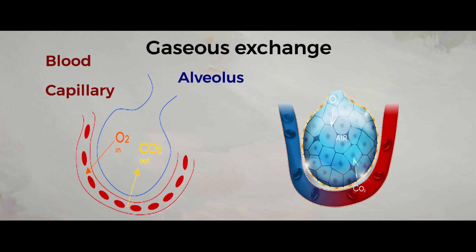When you breathe in, you have more oxygen in the alveoli, while the blood flowing in the capillaries has more carbon dioxide and only a limited amount of oxygen. Comparing the concentration of oxygen in the alveoli and in the blood capillaries, you have learned that gas molecules move from higher concentration to lower concentration. So, since there is high concentration of oxygen in the alveoli compared to the blood capillary, oxygen automatically diffuses from the alveolar sac into the blood capillaries.